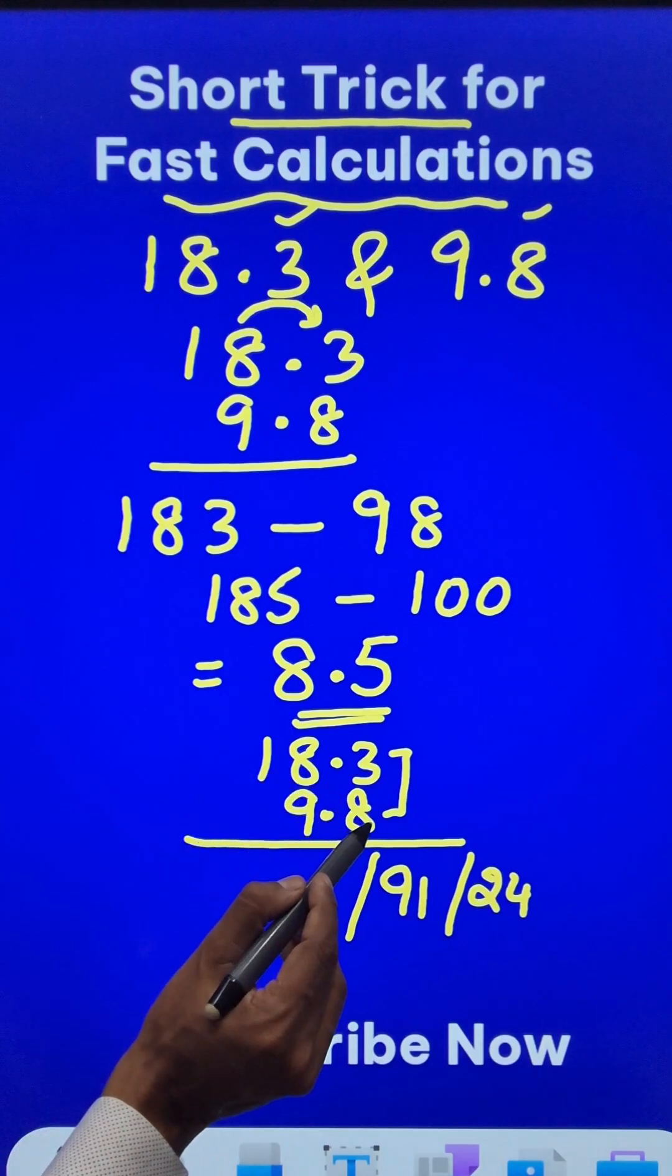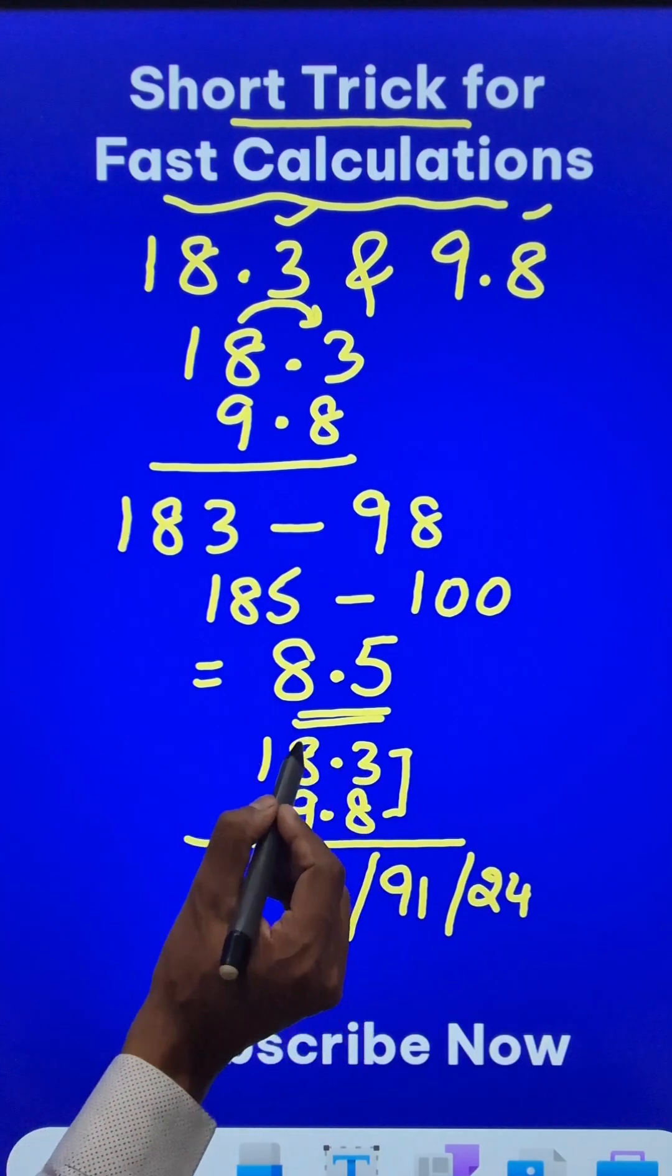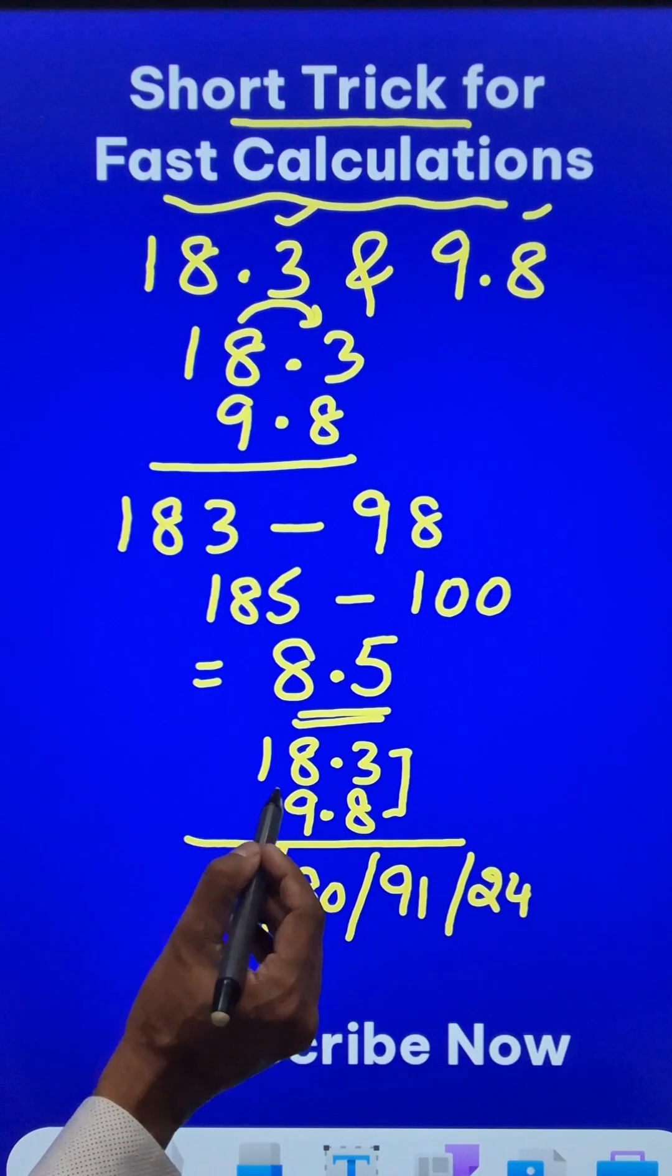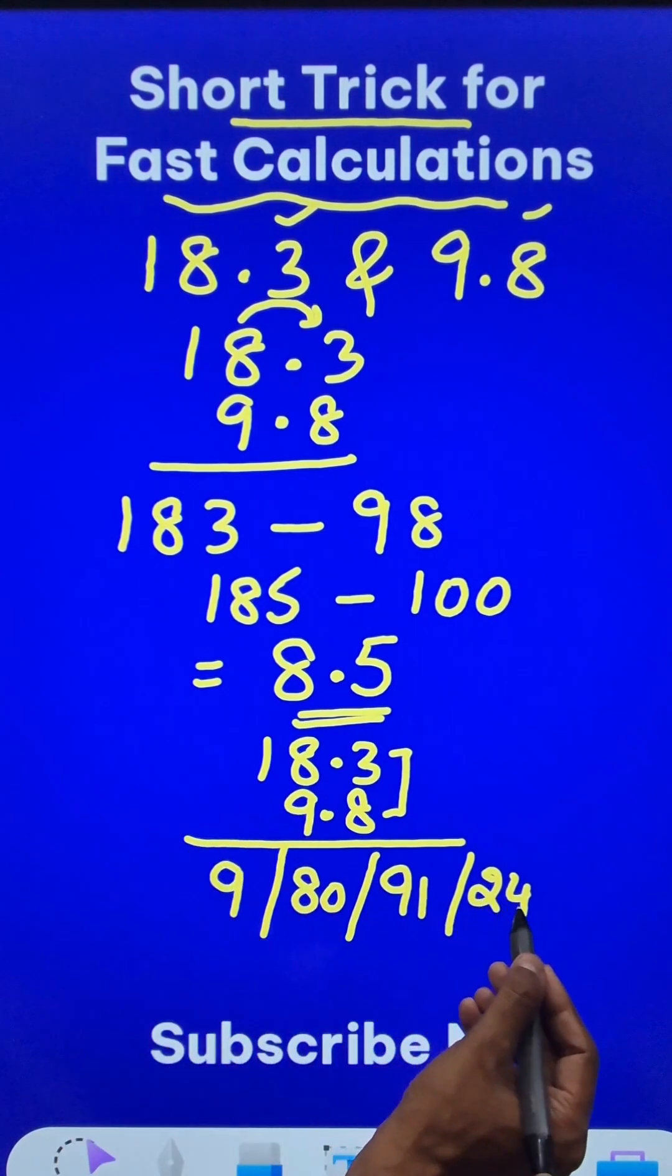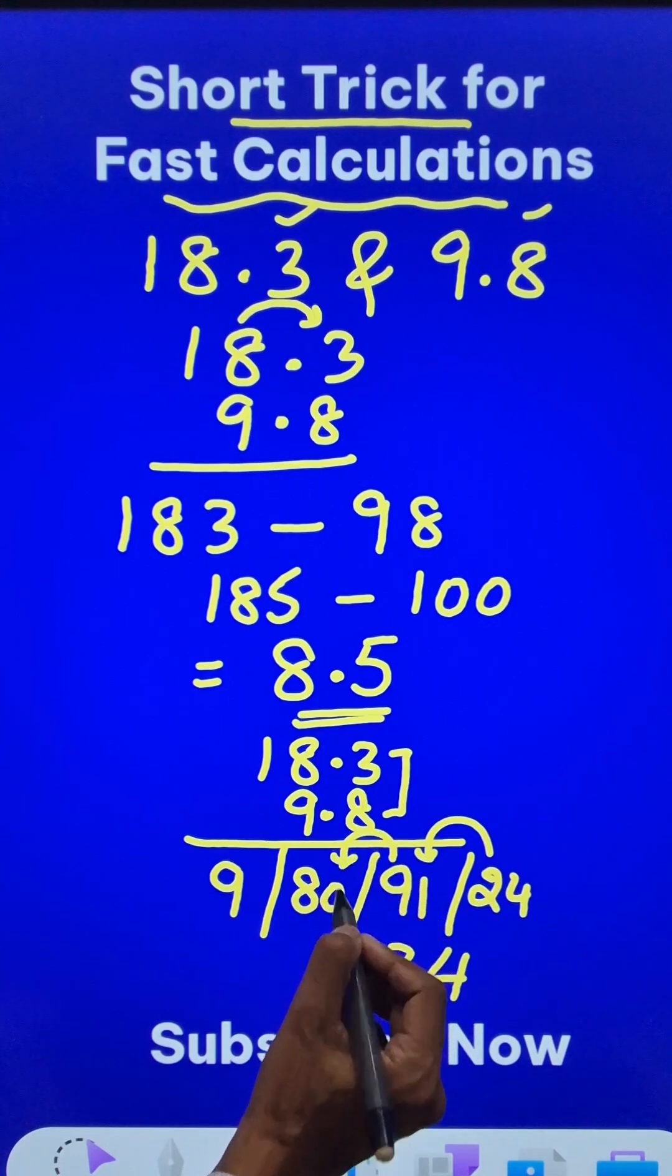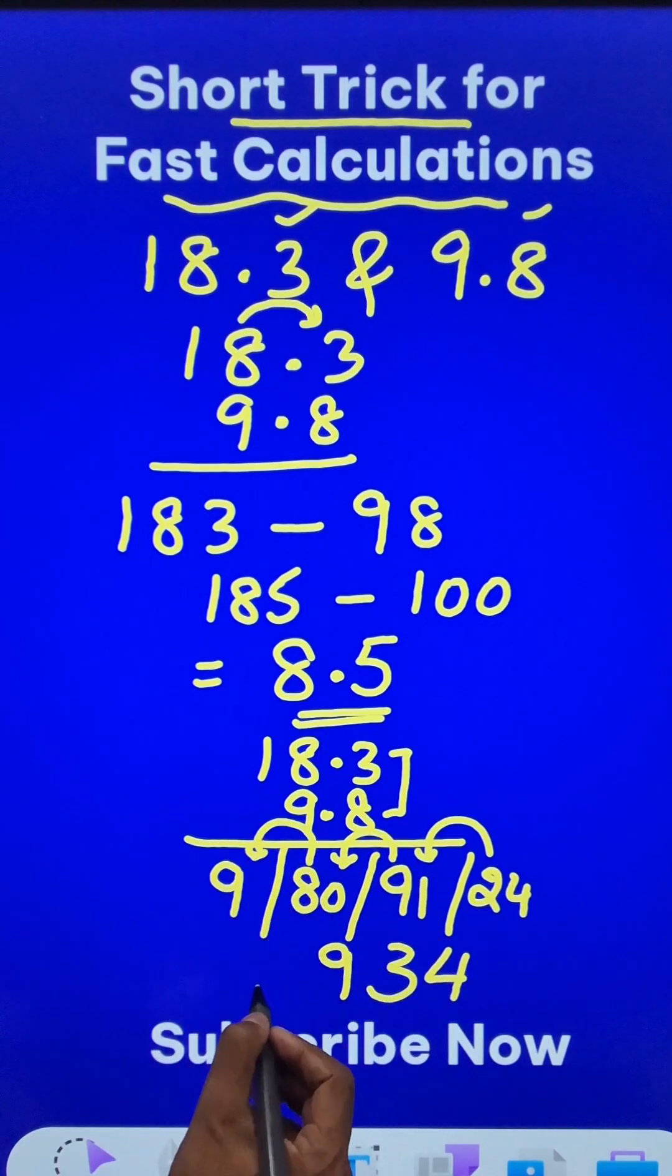Next, cross multiply 1 and 8 and then 8 and 9. So 8 plus 72 gives 80 and finally, we have these two getting multiplied. 1 into 9 is 9 and right from the right hand side, you have 4 and then 2 carried means 93, 3. 9 carried means 89, 9. 8 carried means 9 plus 8, 17.